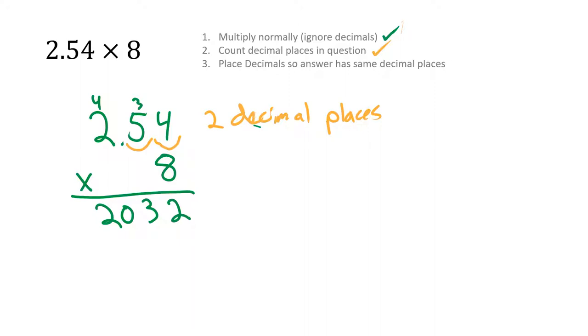Now we place the decimal. The answer has the same decimal places. So this answer needs 2 decimal places. If I start at the very end, I go 1, 2. There's my decimal place. So my answer is 20.32.